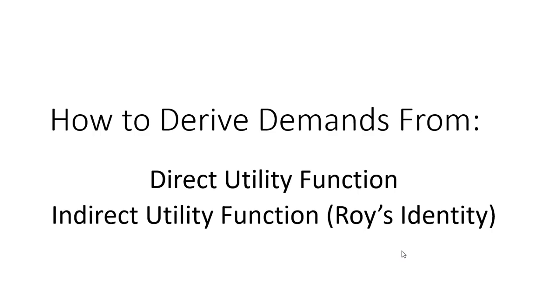In this video, we're going to derive consumer demands for good x and good y from the direct utility function and then the indirect utility function, where we use Roy's identity.